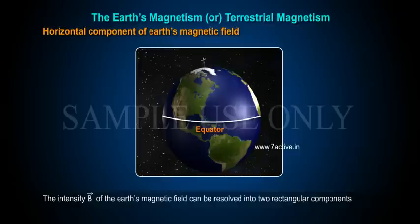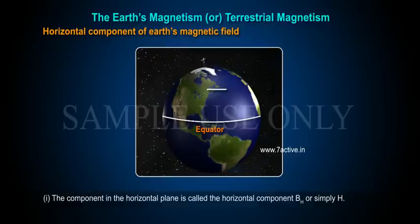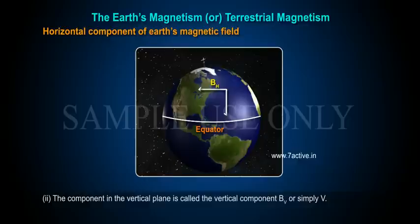The intensity B of the Earth's magnetic field can be resolved into two rectangular components: one, the component in the horizontal plane is called the horizontal component BH or simply H; two, the component in the vertical plane is called the vertical component BV or simply V.